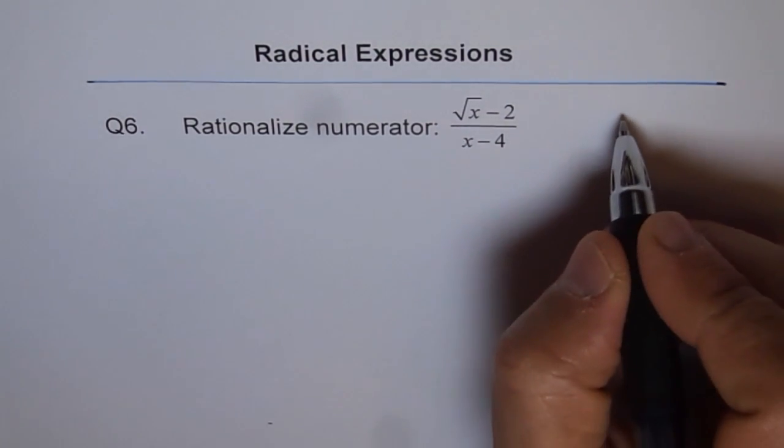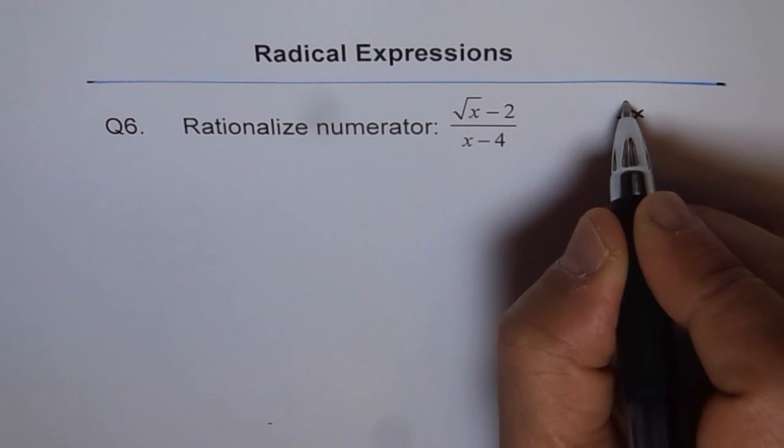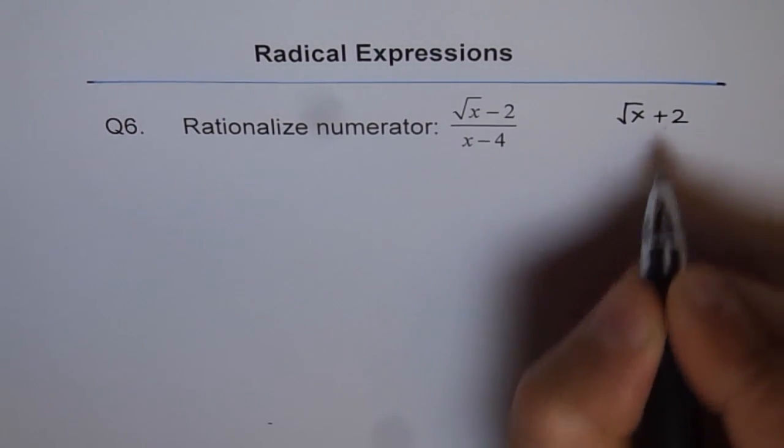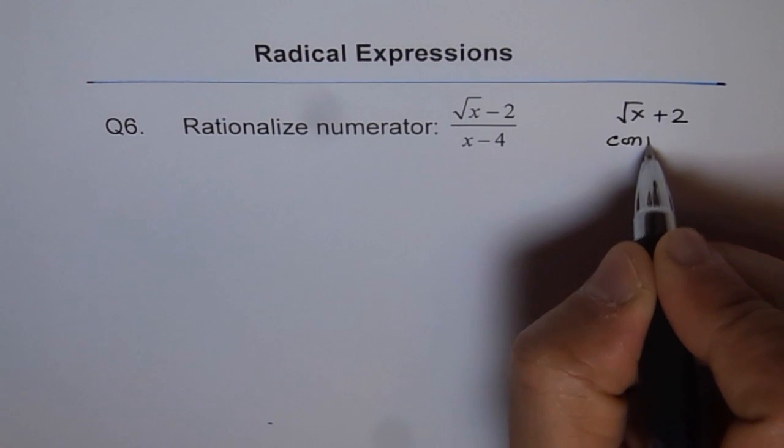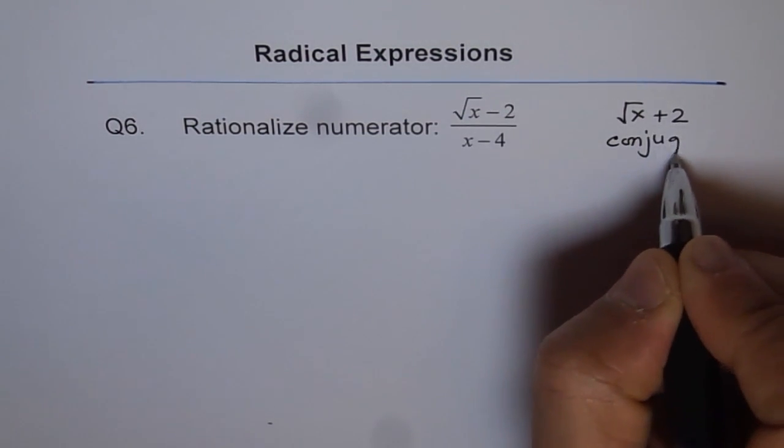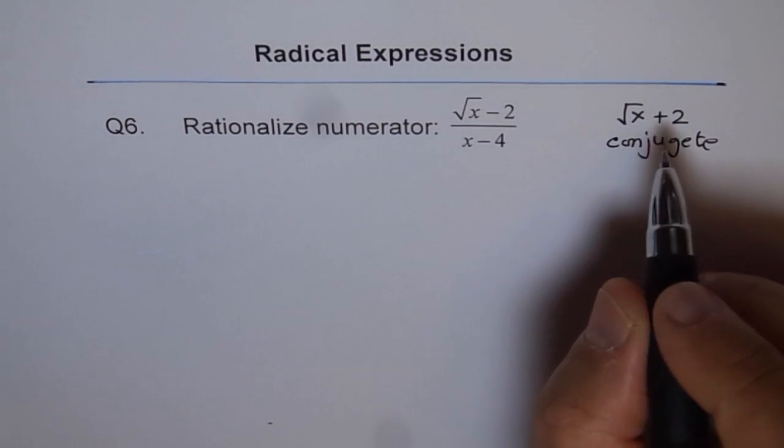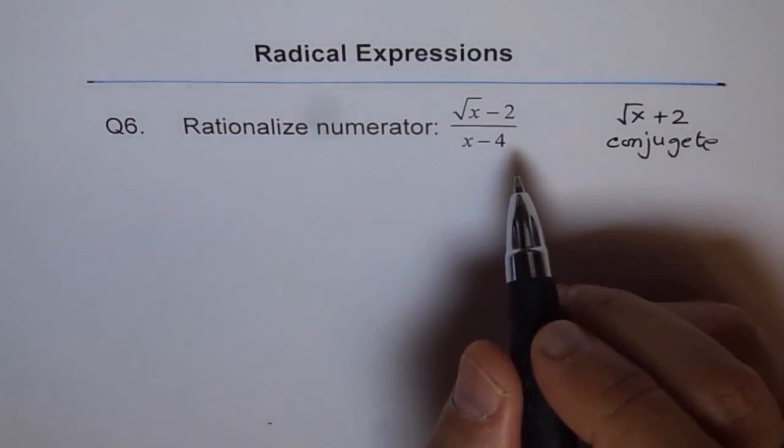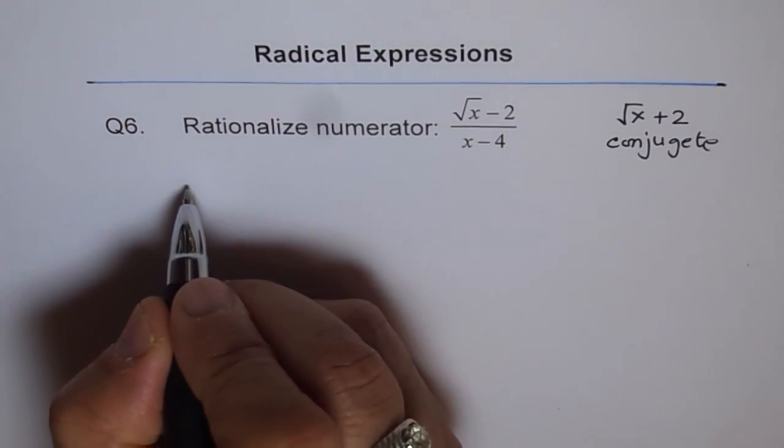The conjugate for the numerator is square root x plus 2. That is the conjugate. We will multiply and divide by conjugate so that we get rid of square root. That is how we will do it.